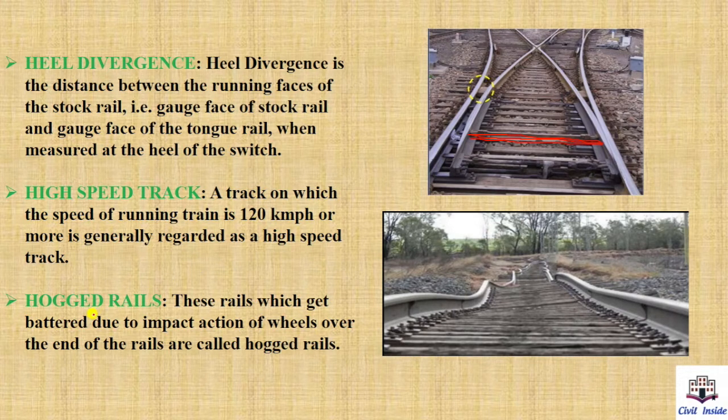Hogged rails — also referred to here as cause rails. These are rails which get battered due to the impact action of wheels over the ends of the rails, and are called hogged or cause rails.